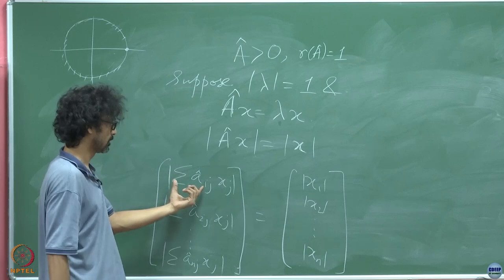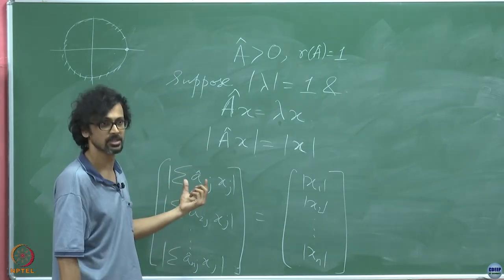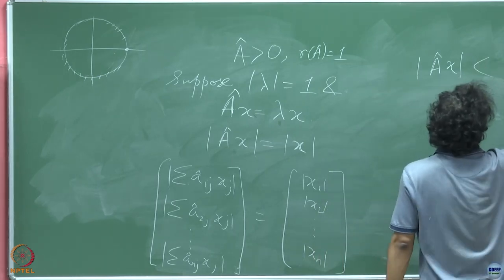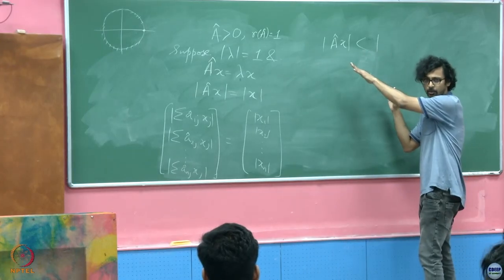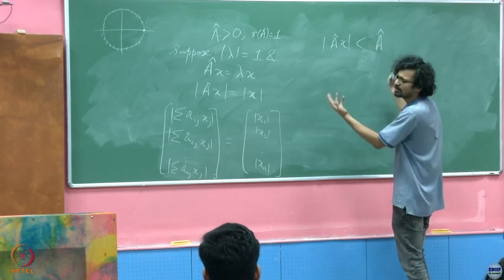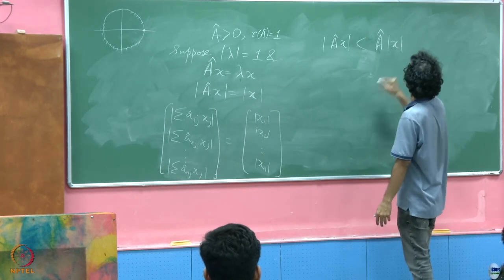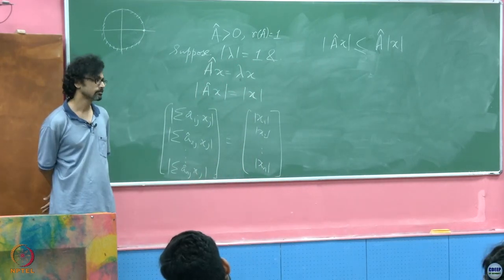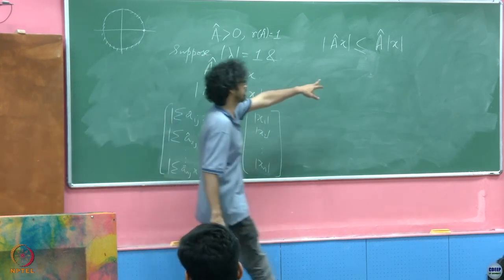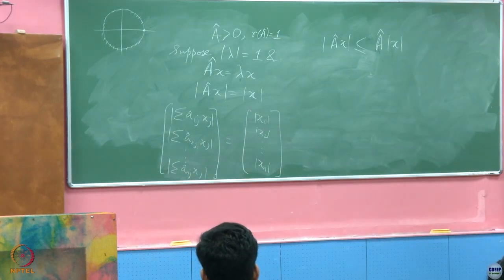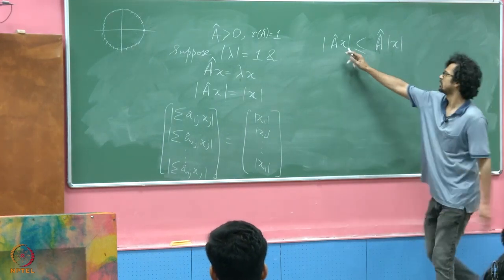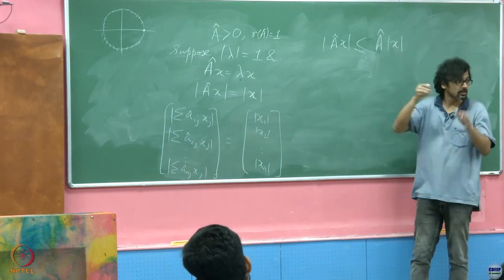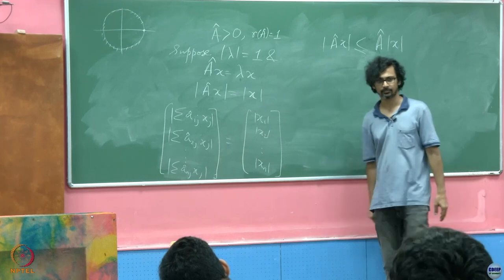What can we say if we had taken the moduli of Â first? Can we not say that |Â x| ≤ Â |x|? The moduli of Â won't matter because A is a positive real matrix — taking moduli makes no difference. So we can write |Â x| ≤ Â |x|. But I'm restricting the entries of x to be only the moduli of those numbers — positive reals.